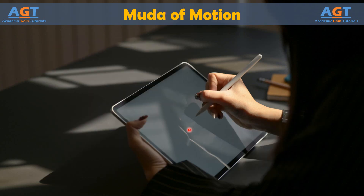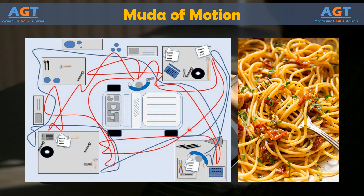A common tool used in manufacturing and similar environments to track movement is known as a spaghetti diagram. Begin with a basic, bird's eye drawing of the workspace. Include furniture, computer stations, machinery, doors, and walls. Observe an actual process, tracking any and all movements with a line on the diagram. When drawn correctly, the diagram looks like a string of spaghetti fell onto your page. Once the process is complete, you can look at the diagram to see where the movements cross paths multiple times or go out of the way unnecessarily.